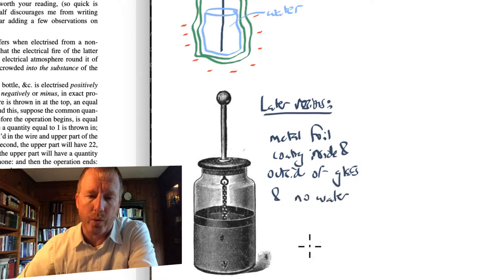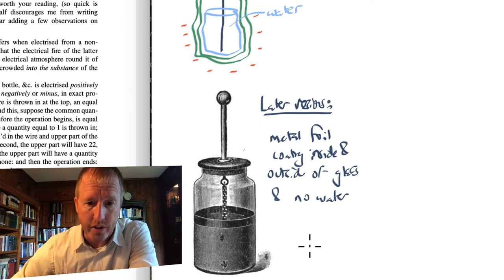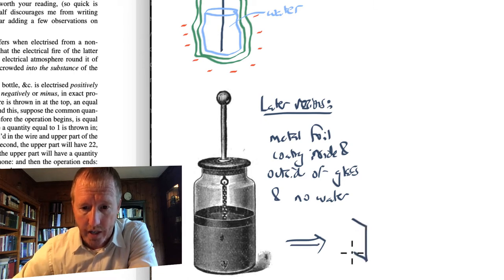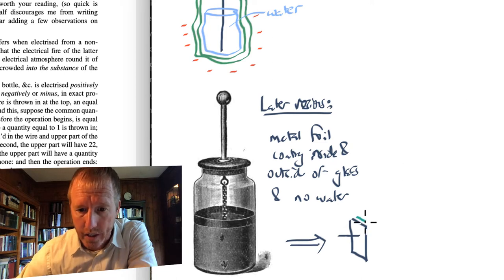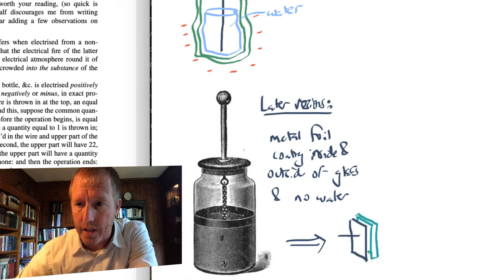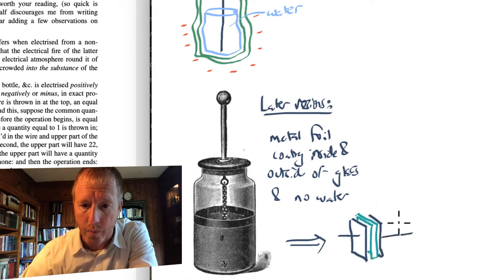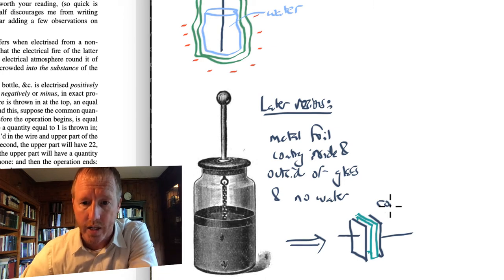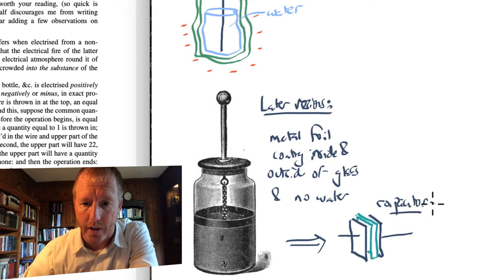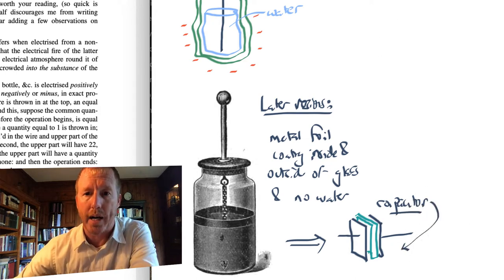And maybe it'd be worthwhile for me to mention right away that where eventually this leads to is the modern day capacitor, which consists of a metal foil attached to a metal wire with a glass or mylar or some other insulating material, and then another metal foil like this. So it's kind of a sandwich with metal foil on the outsides and some mylar or other insulating material on the inside. So this is the modern day capacitor right here. We'll come back to that later.